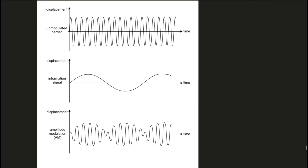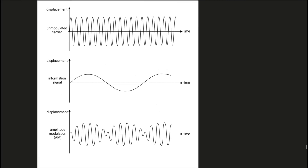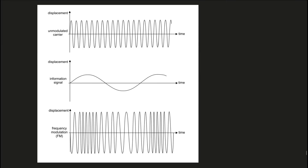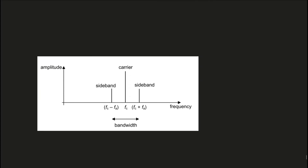This graph represents amplitude modulation. The first graph shows the unmodulated carrier wave, the second graph shows the information signal according to which the carrier wave will be modulated, and the third graph shows what the carrier wave looks like after amplitude modulation — this is AM. The next graph represents frequency modulation: the first graph is the unmodulated carrier wave, the second is the information signal, and the third shows how the frequency varies in synchrony with the displacement of the information signal. This graph shows the frequency of the carrier wave, the sidebands, and the bandwidth after amplitude modulation by an information signal of a single frequency.